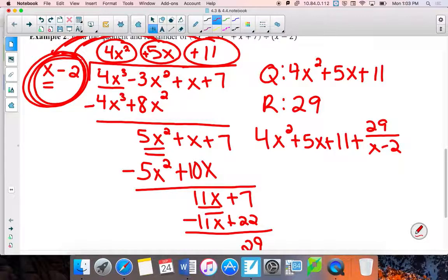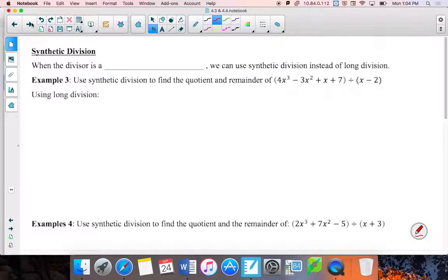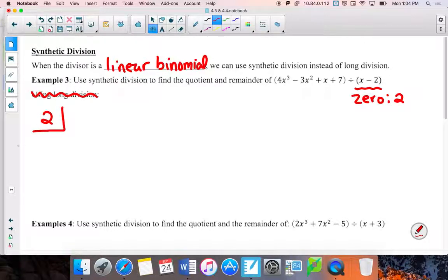All right, let's go ahead and flip over to synthetic division. When the divisor is a linear binomial, we can use synthetic division instead of long division. So there are times where you have to use long division, but most of the time you can choose either synthetic or long. So take that away. It doesn't really need to be there. We're going to do the exact same division that we just did on the previous page, but I'm going to show you how to do it with synthetic division. With synthetic division, you need the 0. So x minus 2 is currently a factor. The 0 of that, set it equal to 0, and we know that it's just going to be a positive 2.